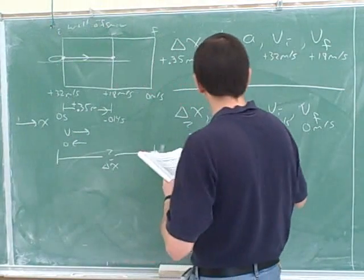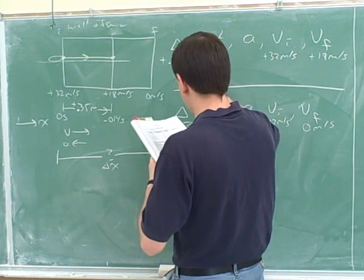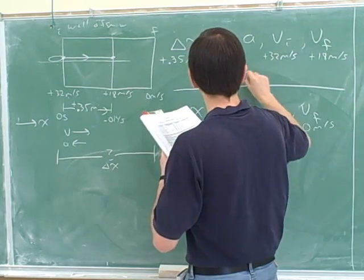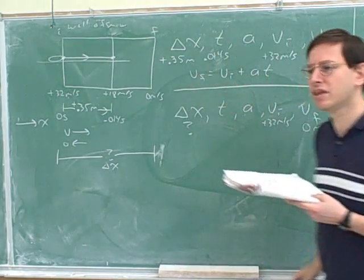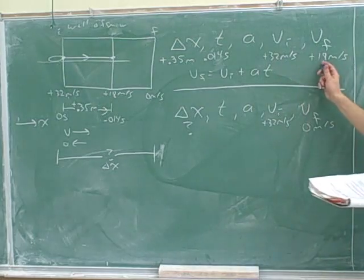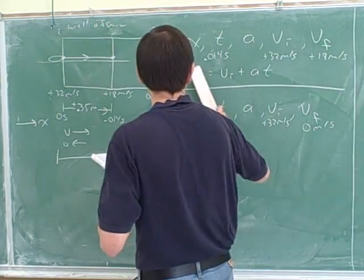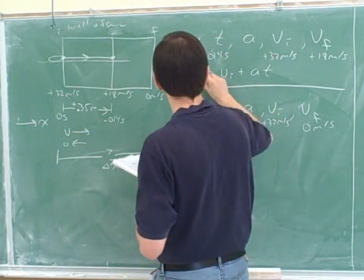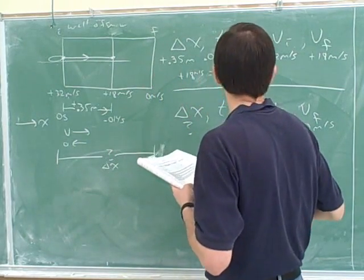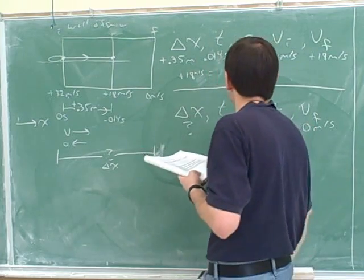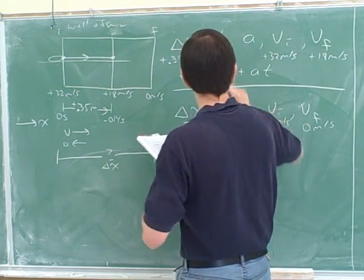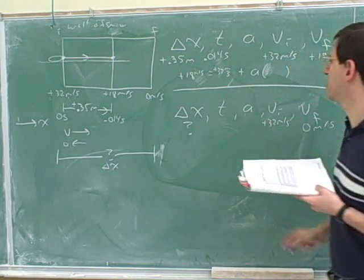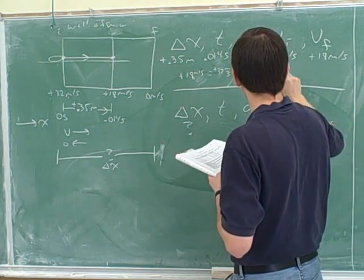I think you all picked the same equation. Maybe the easiest equation to use here is v final equals v initial plus a t. And then we can plug in for v final, we can plug in our positive 18 meters per second. And our v initial is positive 32 meters per second. Time. Now the time is what we'd already figured out in part a, the 0.014 seconds.